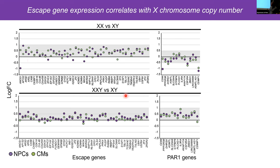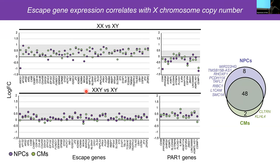In the next comparison — Klinefelter cells versus male cells — where you have more X chromosomes, escape genes are generally more highly expressed. The PAR genes here are not X-dosage dependent but sex chromosome dosage dependent, as they're present on both Y and X. Interestingly, when you add a Y chromosome — comparing XXY versus XY — the sex bias in ANOS1 disappears, suggesting that X-linked escape gene expression is being driven by the presence of a Y.